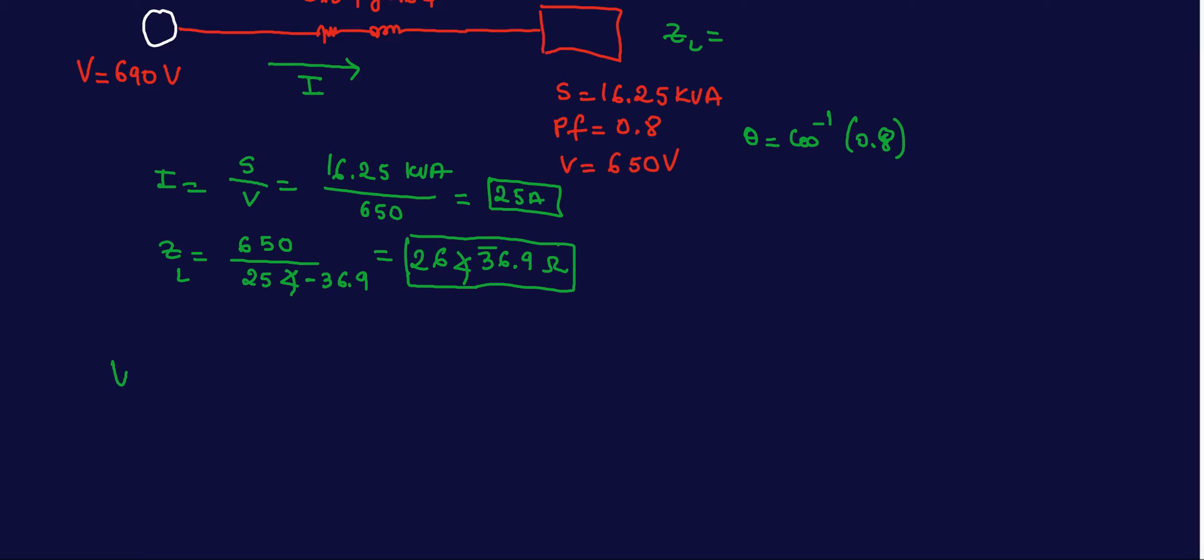So V at the load will then be 690 minus the voltage drop, and this voltage drop is equal to IR times Z feeder plus Z load. So this is equal to 690 minus I, which was 25...